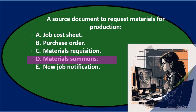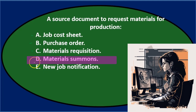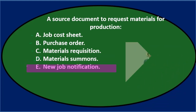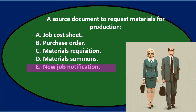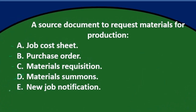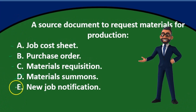D says a materials summons. That sounds funny to me — summons is serious terminology for requesting materials; I think that's a made-up term. And E says new job notification. That might be the reason for requesting materials, but we don't request materials with a new job notification — we got notified of a new job and therefore are requesting materials. So I don't think it's E.